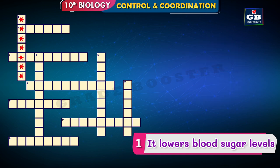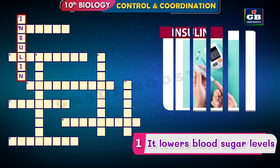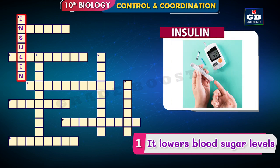The answer is insulin. Insulin is a hormone secreted by the pancreas and it controls the blood glucose level. Lack of insulin leads to diabetes. So the answer is insulin.